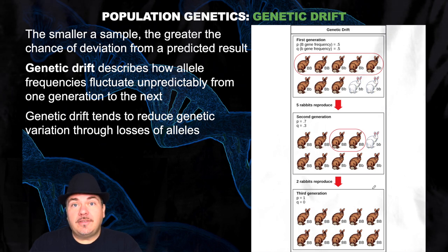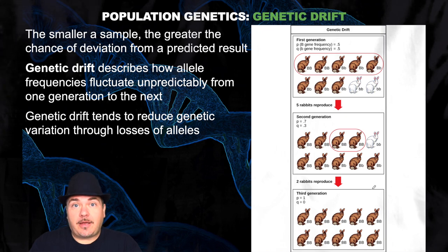This is seen in a very small population size. For example, if there were 10,000 rabbits, you wouldn't be seeing genetic drift like this.